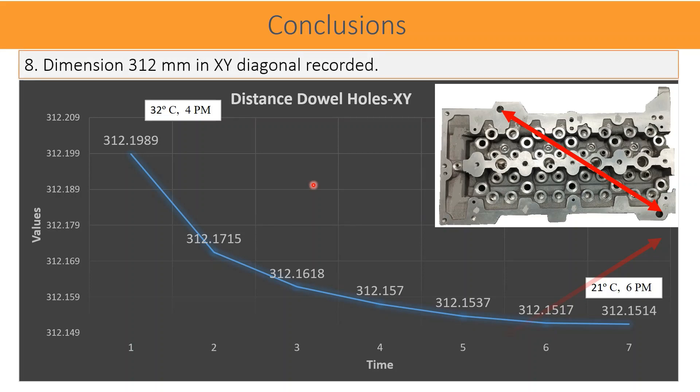In this graph, the measured dimension 312 mm is in diagonal direction comprising the X and Y axis measurement. The second reading dropped down by 27 micrometers. Please note that the dimension 371 mm in Y axis dropped by 21 micrometers as discussed in the last slide, whereas diagonal dimension 312 mm dropped by 27 micrometers. What it shows? It shows that there is not any direct proportionality relation for the part dimensions, but on the feature and its characteristics measured.